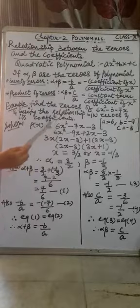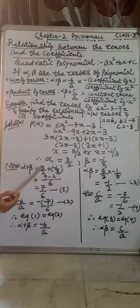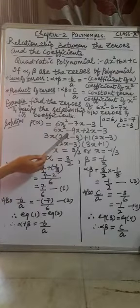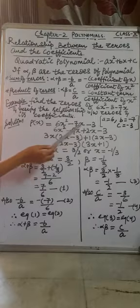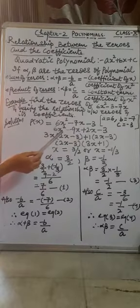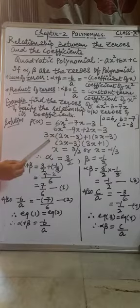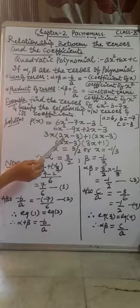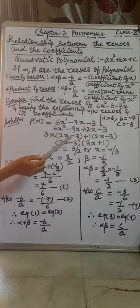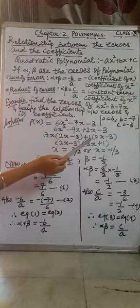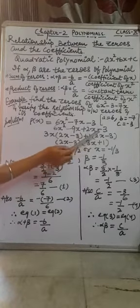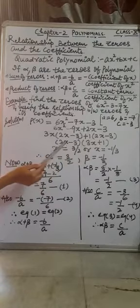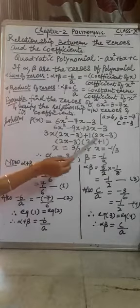Now we will do the middle term splitting. 6 times 3 is 18. We divide 18 so that we get 7: 9 times 2 is 18, and minus 9x plus 2x gives us minus 7x. From 6x squared minus 9x, we take 3x common, giving 3x times 2x minus 3. From 2x minus 3, we take 1 as common, giving 2x minus 3. These two brackets are the same, so taking them as common, the second bracket will be 3x plus 1.